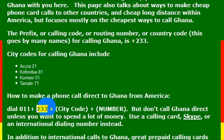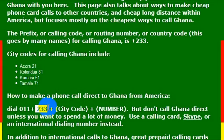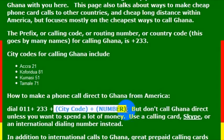So if you wanted to dial to Ghana, you would dial 011, then 233. 011 is the international calling code from the United States. Then you would dial 233 and then the number that you would like to reach.